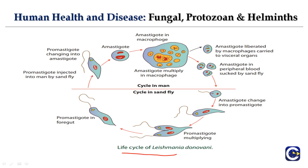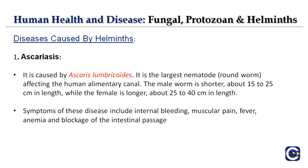Here is the life cycle of Leishmania donovani. The promastigote is injected into humans by the sandfly, changes into an amastigote, then converts inside macrophages. The amastigote is liberated by macrophages and carried to the visceral organs. Amastigotes in peripheral blood are sucked by the sandfly, change back into promastigotes, multiply in the foregut, and the cycle revolves.